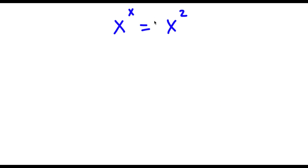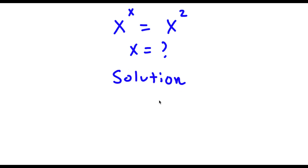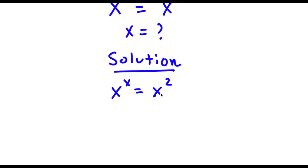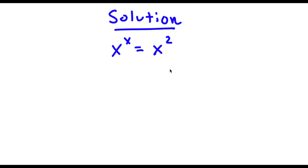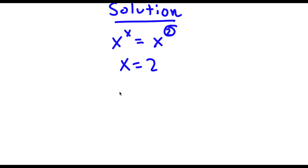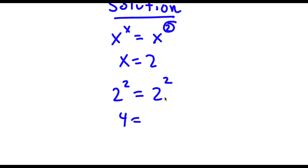Alright, so now I have x to the power of x is equal to x to the power of 2, and I want to find the value of x. A very obvious solution to this would simply be x equals 2, because if I plug it in I get 2 to the power of 2 equals 2 to the power of 2, which is 4 equals 4. So x equals 2 is an obvious solution, but this isn't the only solution to this problem.